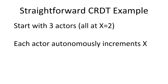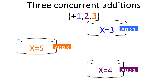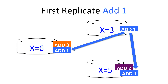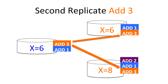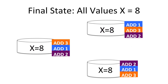Let's do some examples. Let's have three actors — everybody starts with the value X equals 2, and each of these actors is going to autonomously increment X. Blue guy adds 1, purple guy adds 2, orange guy adds 3. Now these modifications are replicated and it doesn't matter in which order — we could have done 3 first or 2 first. At the end, when we start with X equals 2 and add 1, 2, 3 in any order, we arrive at X equals 8. This is an example of commutative replication.